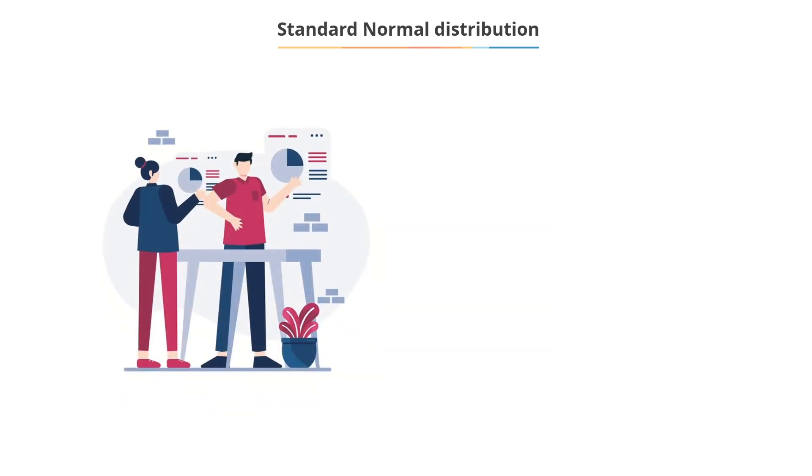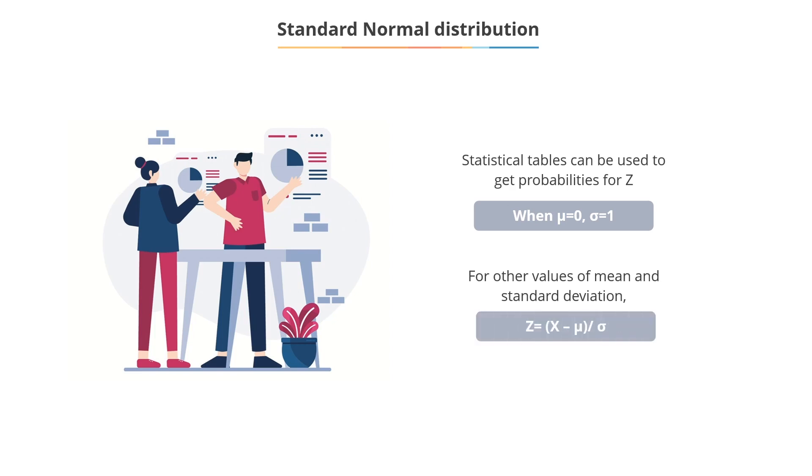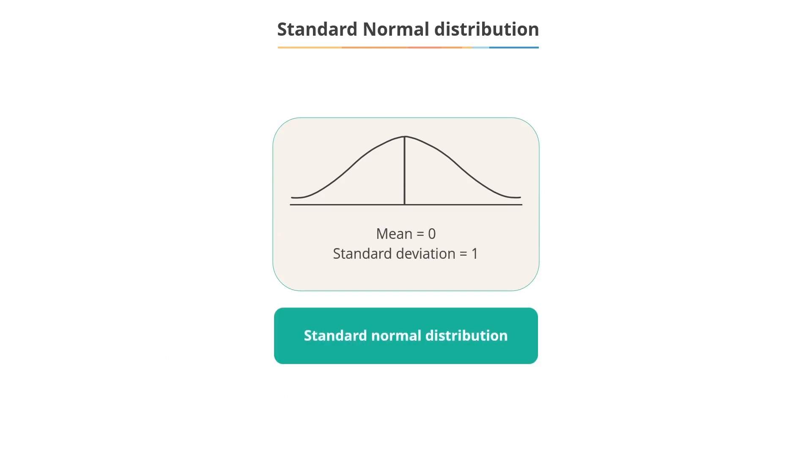Do you know that statistical tables can help you get probabilities for z, that is, the normal distribution with 0 mean and standard deviation unity. For other values of mean and standard deviation, probabilities are obtained using the transformation z equals x minus mu by sigma. Keeping this consideration, the normal distribution with mean 0 and standard deviation 1 is called the standard normal distribution.